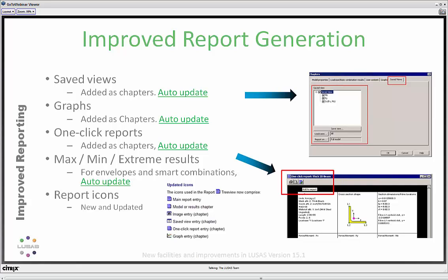For the improved report generation, the theme for this release is the ability to automatically update the document with everything inserted from the Lusas model. We can now save a view with a particular name — Julian will be showing this in detail shortly. Any view attached to the report will auto-update, or you can freeze it. This applies to graphical views and graphs alike. We also have a new facility called OneClickReport. New icons have been added to assist with building and updating reports.